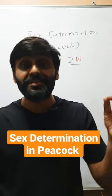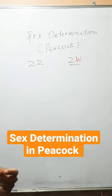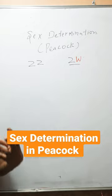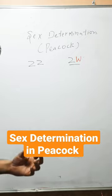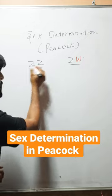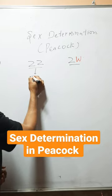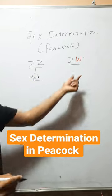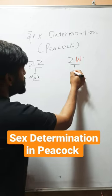Do you know how sex is determined in peacocks? In peacocks, ZZ and ZW type of sex determination is found where a peacock which has ZZ chromosome is male and which has ZW chromosome is female.